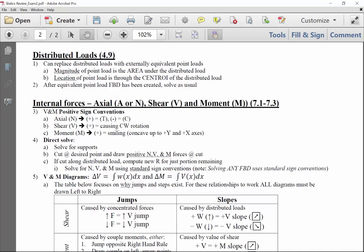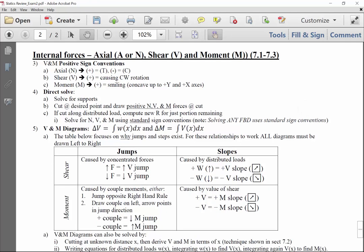After distributed loads, we got into chapter 7. Chapter 7 was looking at the internal forces. Once we cut inside a multi-force body, we expose an axial force, we expose a shear force, and we expose a bending moment. This is covered in sections 7.1 through 7.3, although we didn't really dig too deeply into 7.2, which is writing these equations, location variable equations. We have positive sign conventions for section 7.1 in order to draw our shear and moment diagrams. The axial force, which is labeled either A or N, is going to be positive in tension, negative in compression.